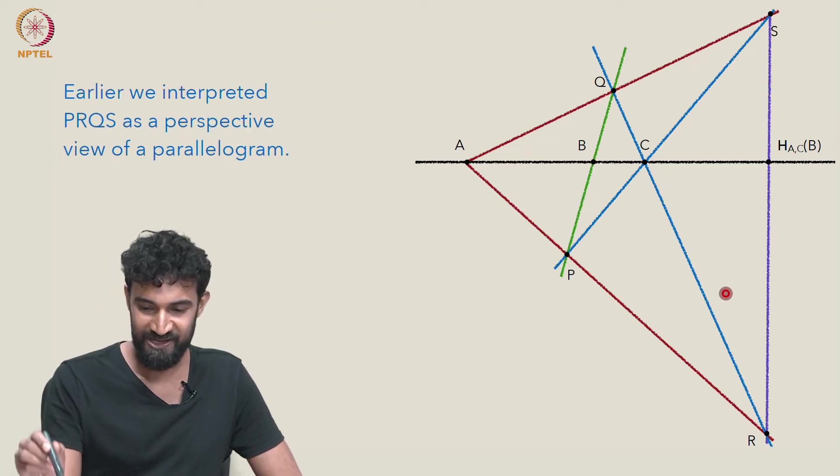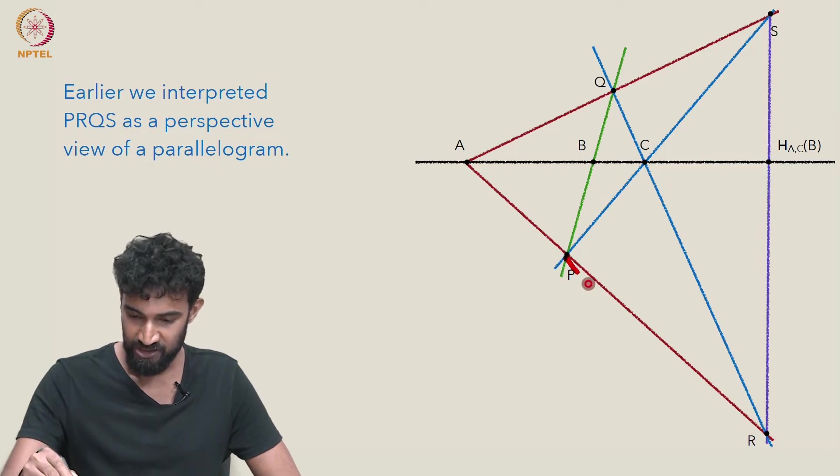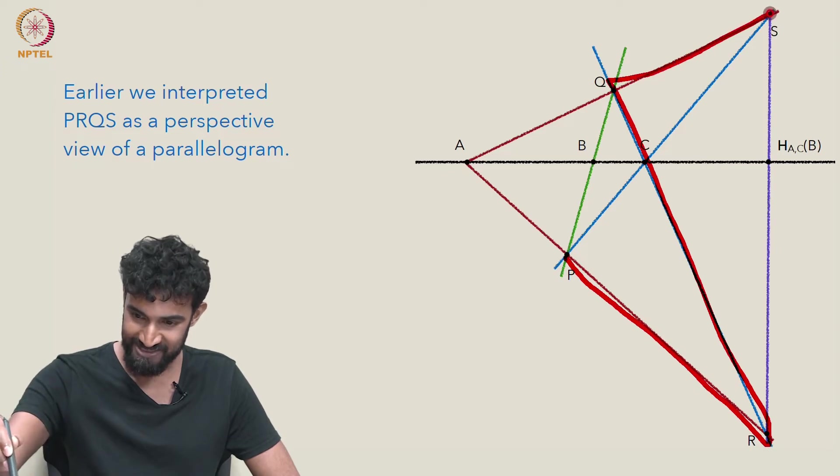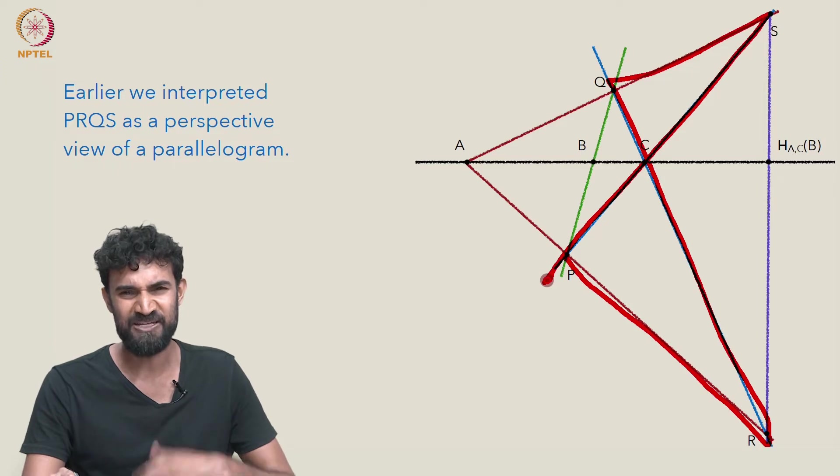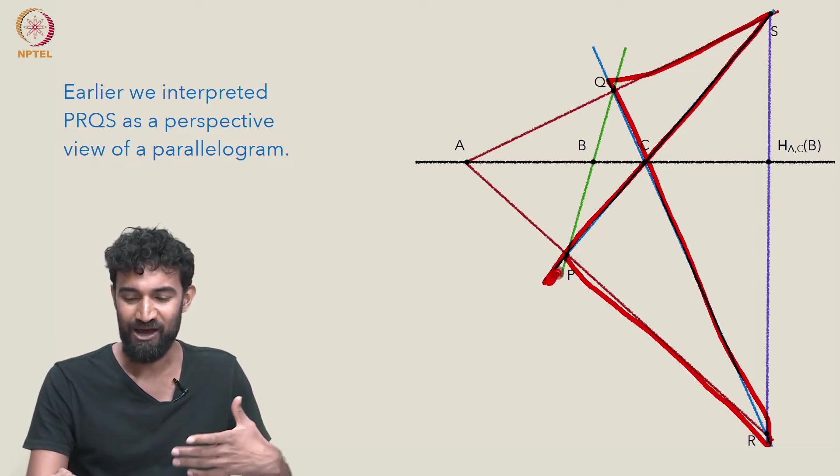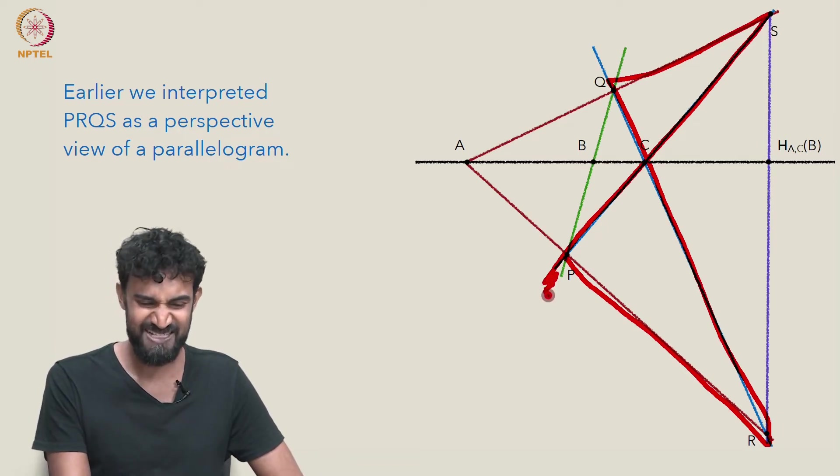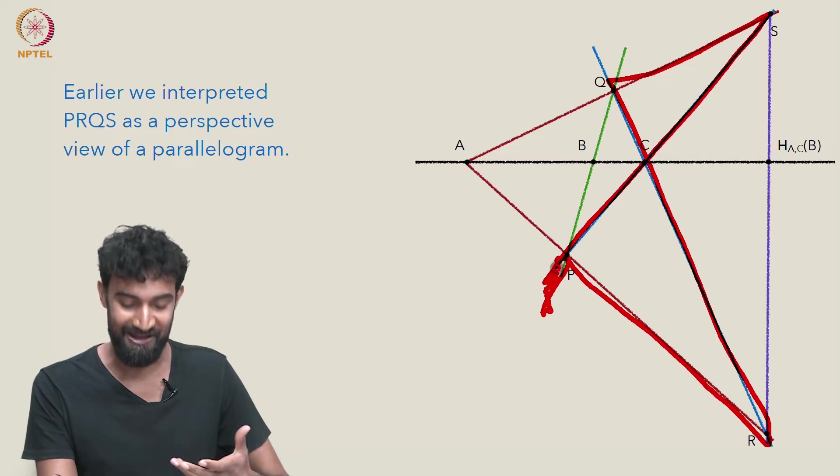Earlier we were interpreting PRQS, that's PRQS back to P. We were interpreting this as a perspective view of a parallelogram. Now it's like a weird crossing X hourglass shape, which doesn't seem like a perspective view of a parallelogram that we could ever achieve in real life.